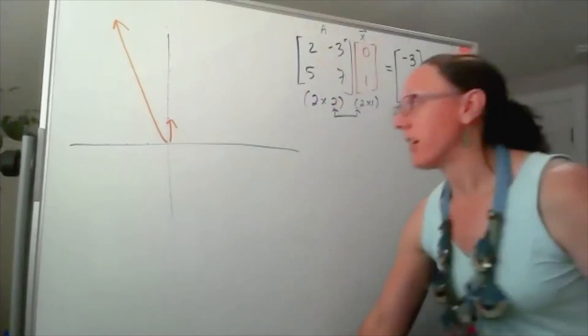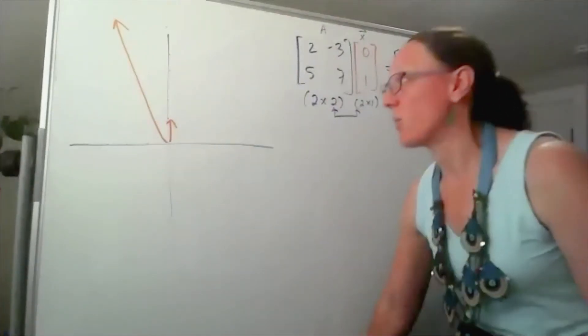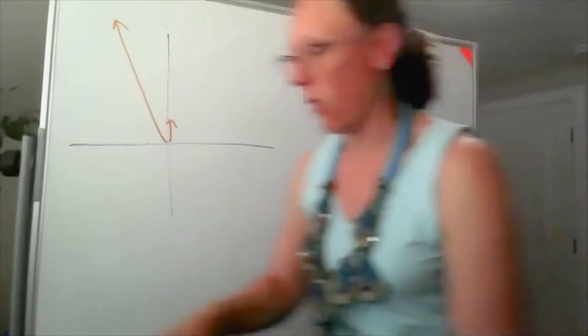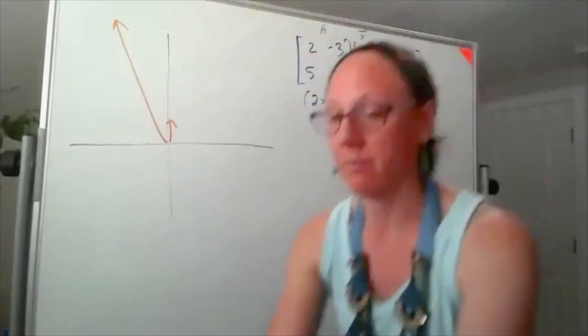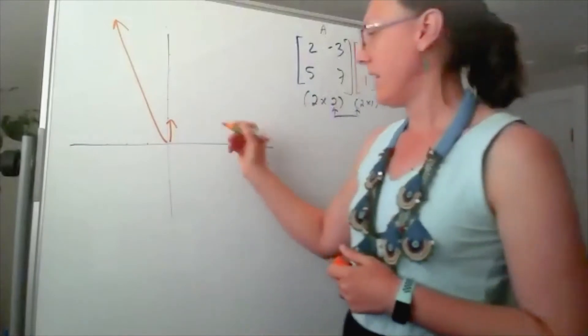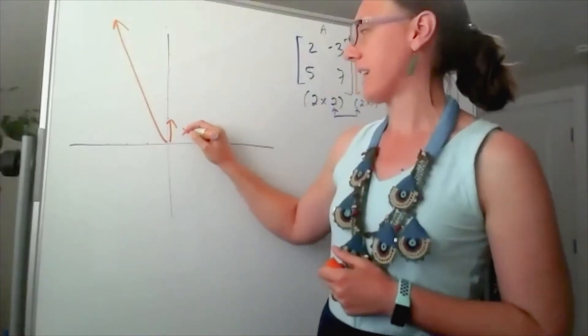If I started with a different vector, so there I started with the vector 0, 1. And just to kind of add some vocabulary to this, if this was my vector x, then this is the image of x under the transformation.